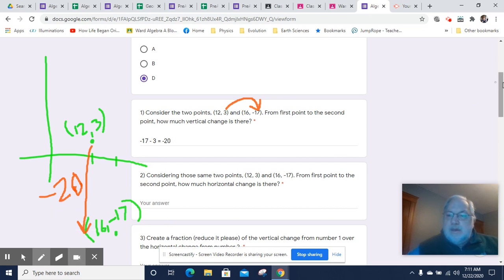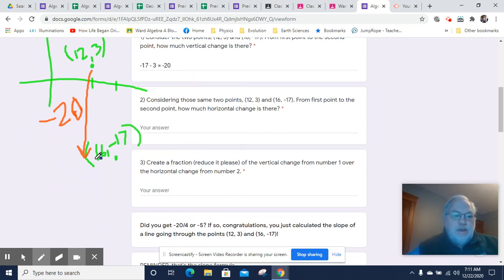The next question, we need to consider the horizontal change from this point to this point, and that's from 12 to 16. So we're going horizontally, and that's in a positive direction. So that's going to, you can eyeball it that that is plus 4, but if you weren't sure, you could make sure to calculate it by just saying 16 minus 12, and that's going to equal 4.